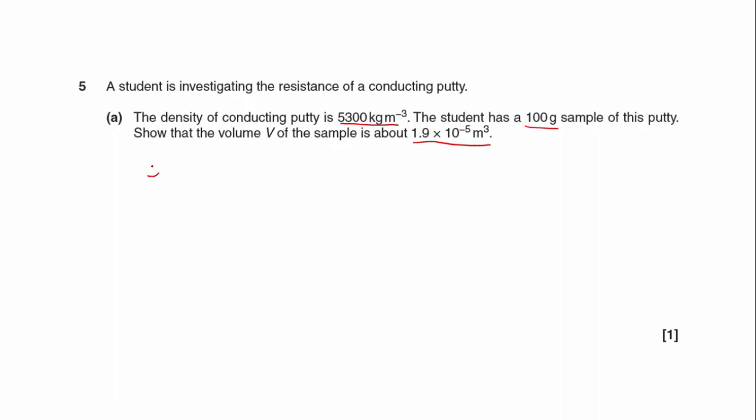So we should realize that density is defined as being the mass per unit volume. We're after the volume, so the volume will be the mass over the density. So in kilograms, that's going to be 0.100 kilograms divided by the density of 5,300.